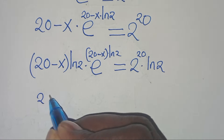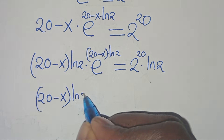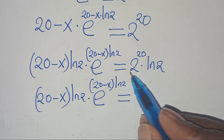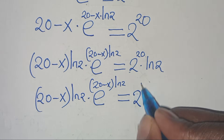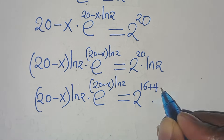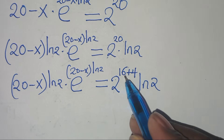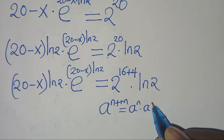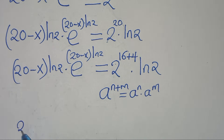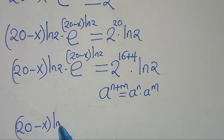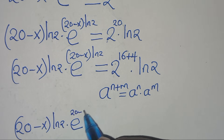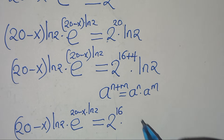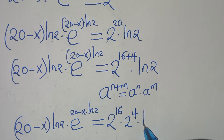So we have (20 minus x) times ln(2), times e to the power of (20 minus x) times ln(2), equals 2 to the power of 20 times ln(2). We can write 2 to the power of 20 as 2 to the power of (16 plus 4), which in the form a^(n+m) equals a^n times a^m gives us 2 to the power of 16 times 2 to the power of 4, then multiplied by ln(2).